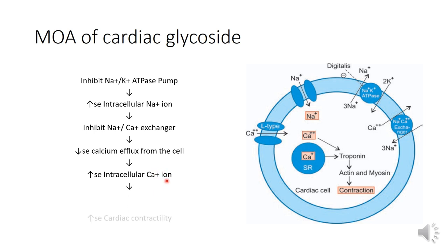This increased intracellular calcium ion leads to increased cardiac contractility. Cardiac glycosides, for example digitalis, are drugs used for the treatment of congestive heart failure. They inhibit the sodium-potassium ATPase pump, which inhibits the sodium-calcium exchanger, increases intracellular calcium ion, and — as we are aware — increased calcium ion leads to contraction of the muscle.